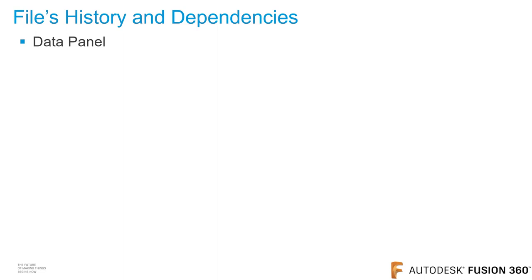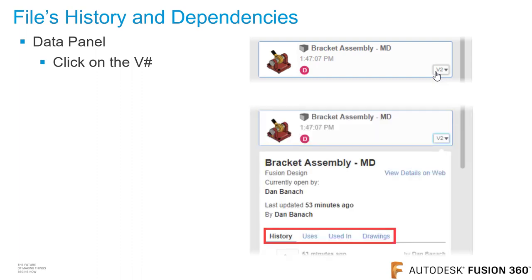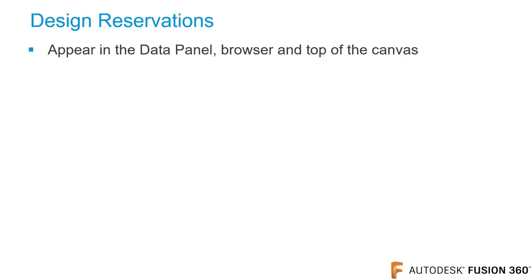To view a file's history and dependencies, open the data panel and click on the version number for the file that you want to examine, and more data will be displayed. Click on History to see the file's versions. A version is created each time a file is saved. The Uses option displays files that are referenced into this file. Used-in shows assemblies that reference this file. Drawings display drawings that are based on this file.